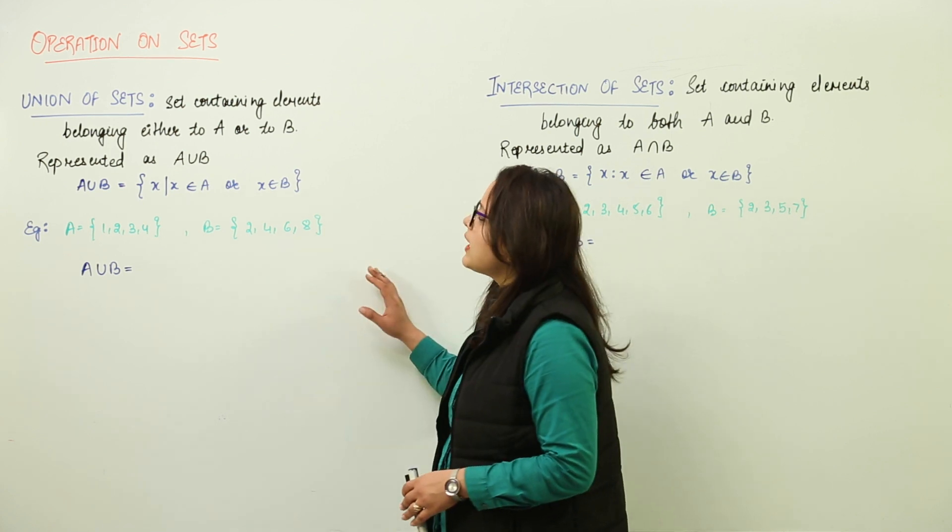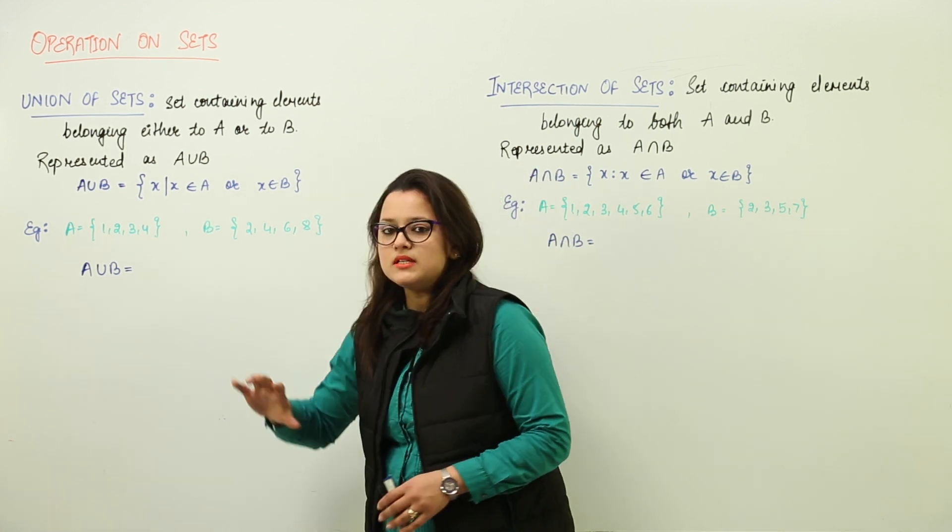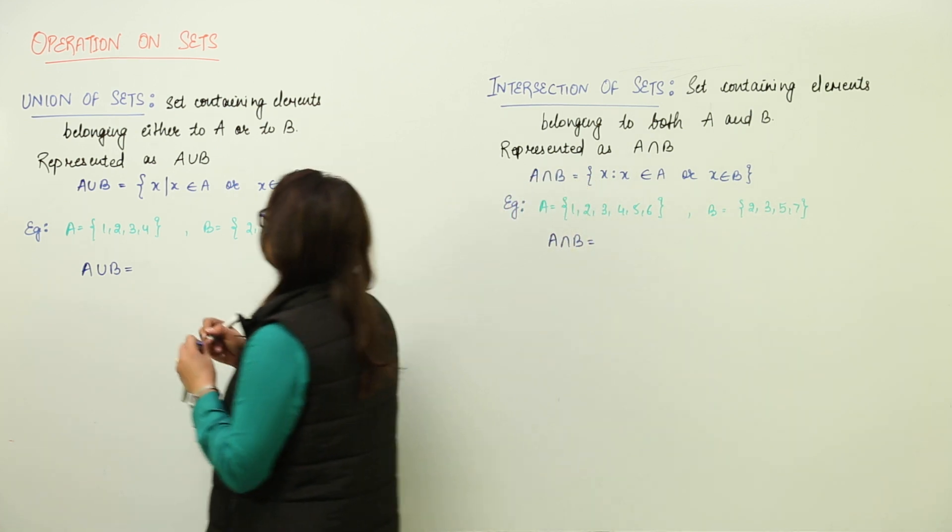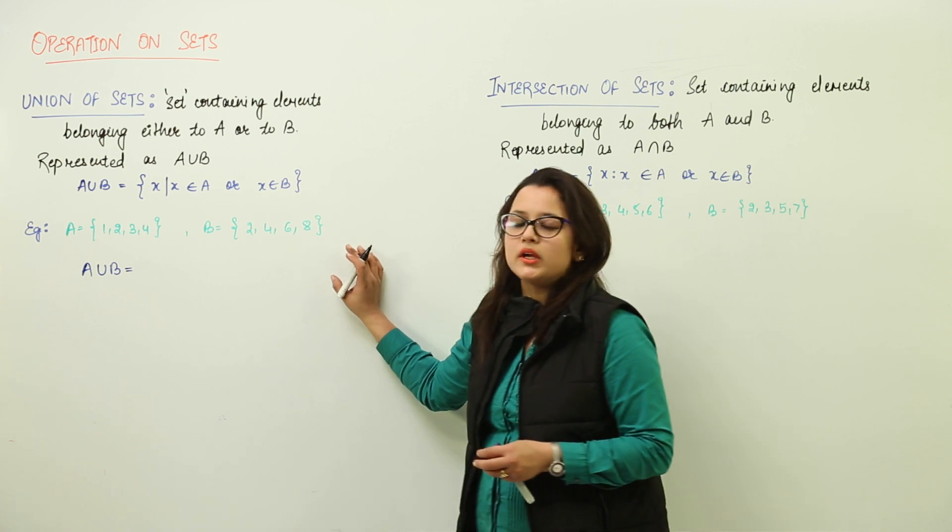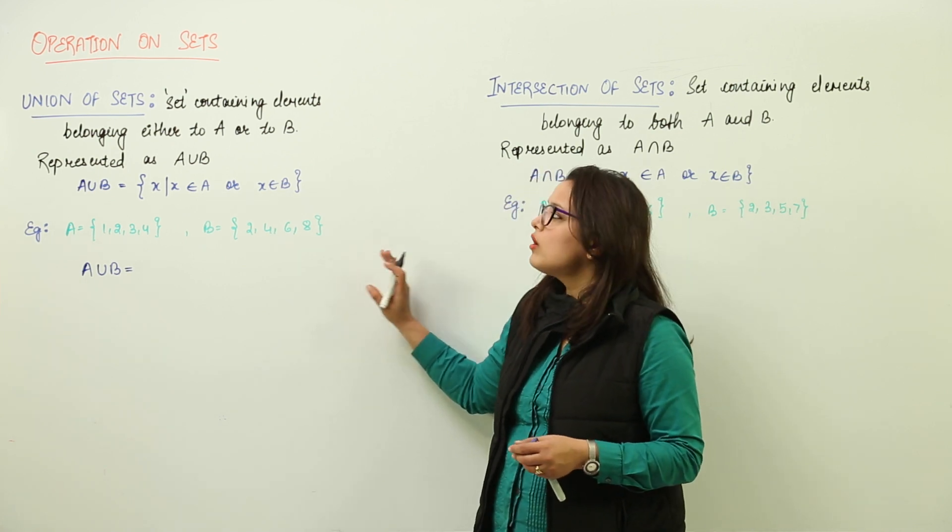For union, what do we have? Union of sets means there is a set which contains the elements belonging either to A or to B.